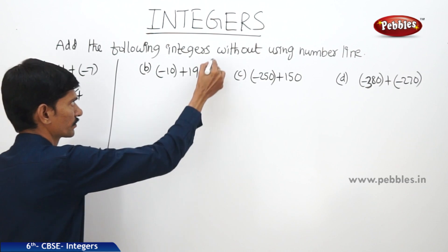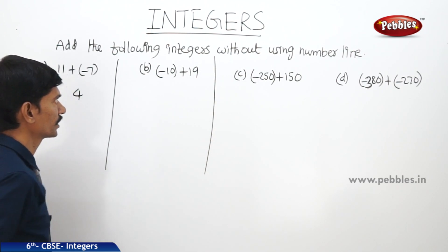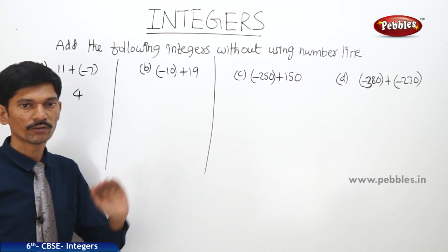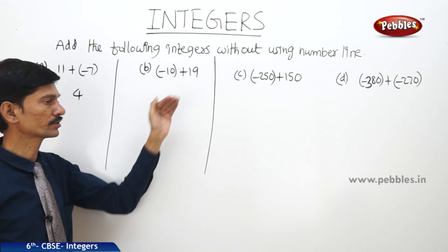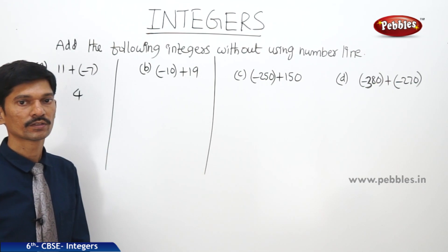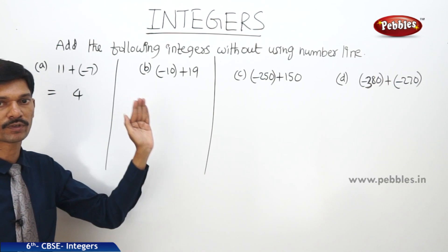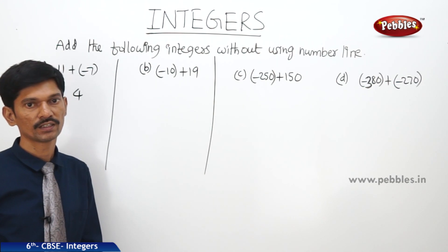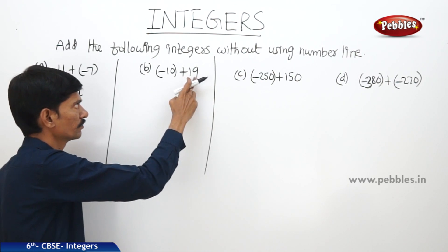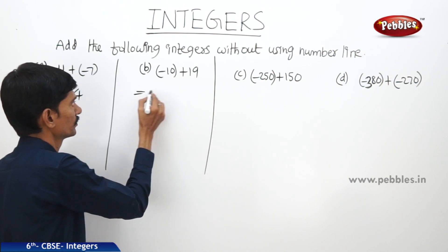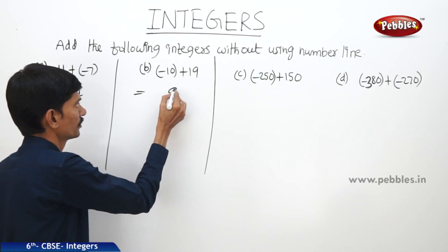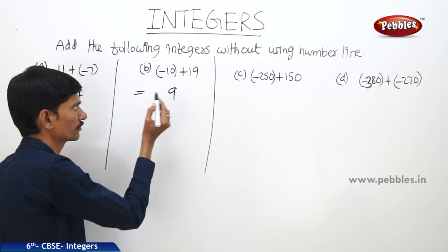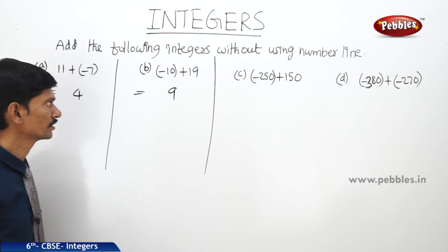Next, (-10) plus 19. Here a negative integer and a positive integer are added. We subtract the smaller number from the bigger number without considering their signs: 19 minus 10 is 9. The bigger number 19 has a plus sign, so the result is +9.